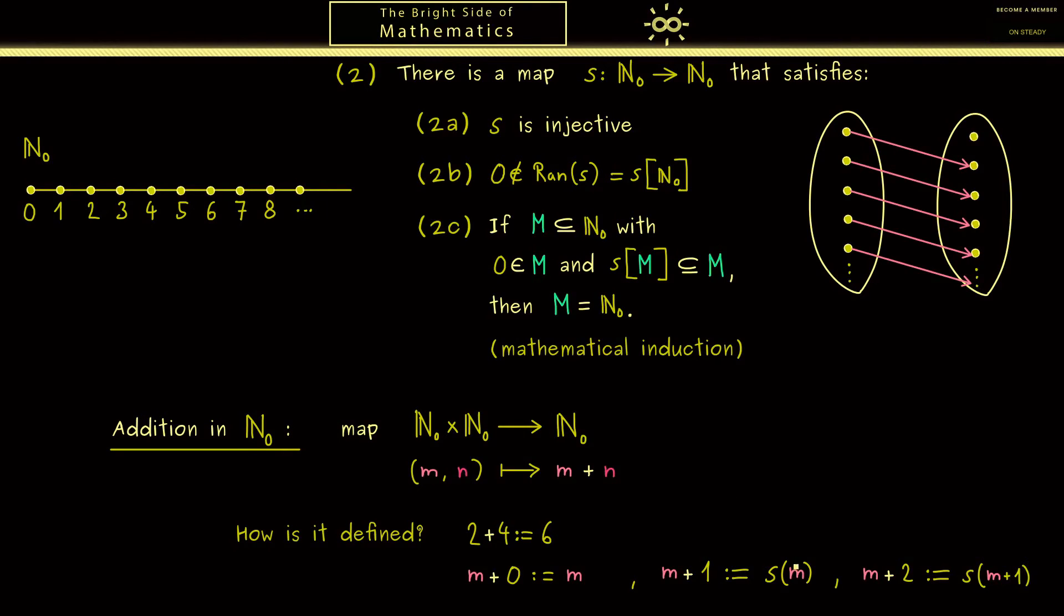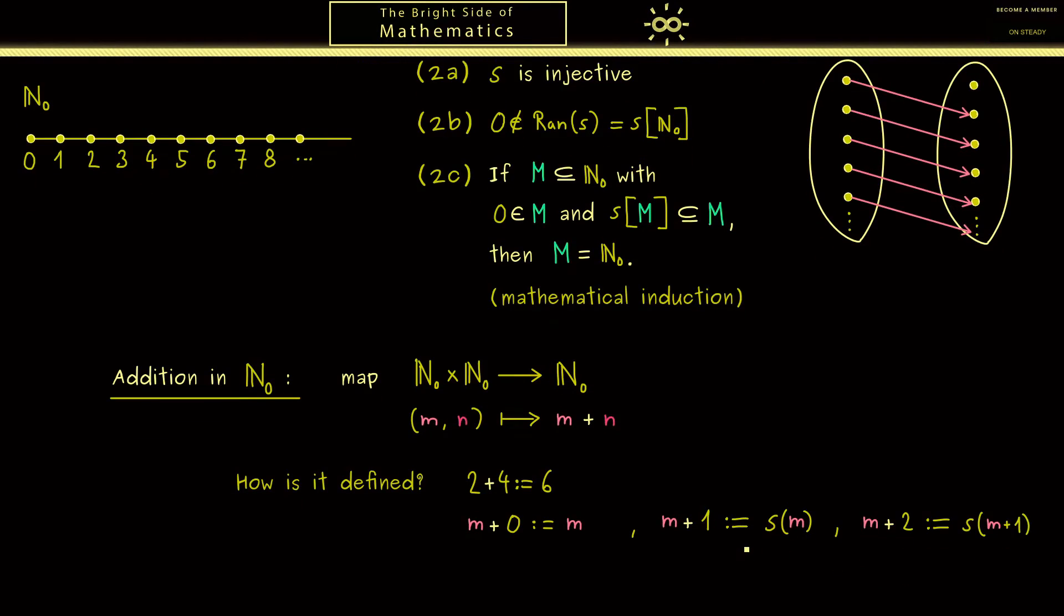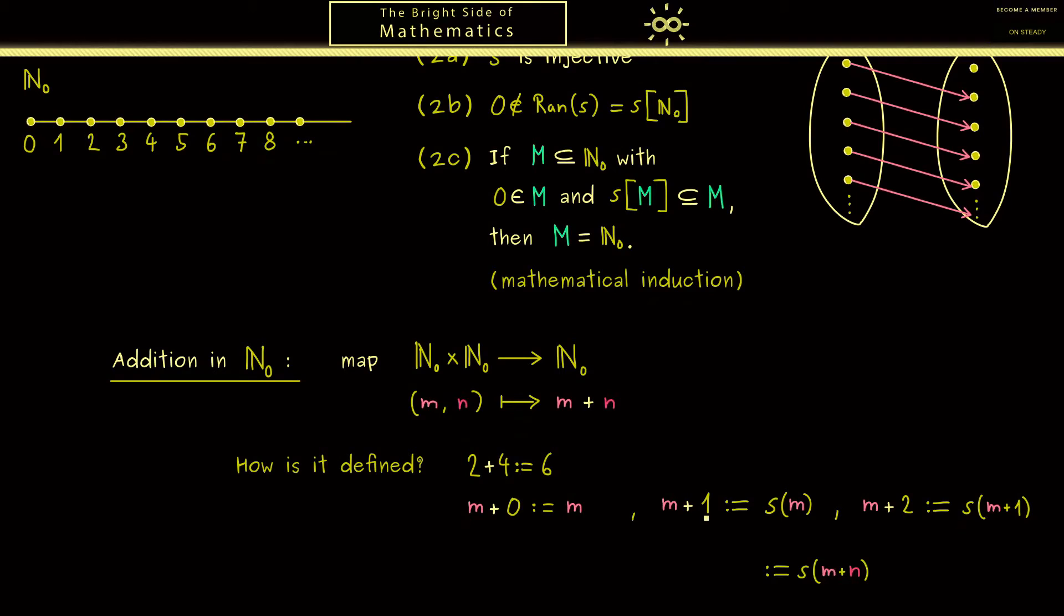Now having this, you should see how we can write down the general definition. In particular, we know what we have when the right hand side reads s and we put in m plus n. Then we have m plus the successor of n. At this point you should see when we have this formula and this one, then we have the whole definition for the map. However, it's a little bit strange because we don't have the explicit definition what m plus n is.